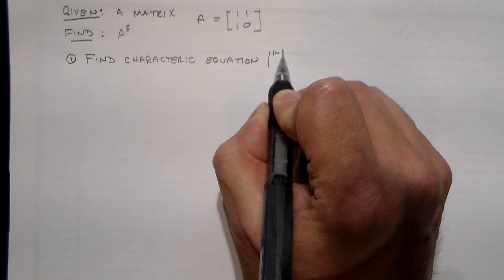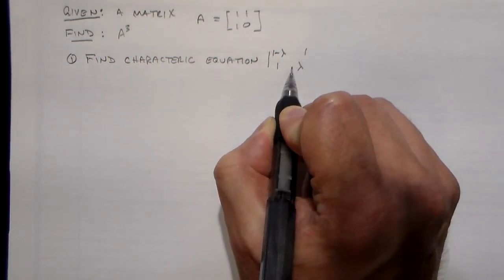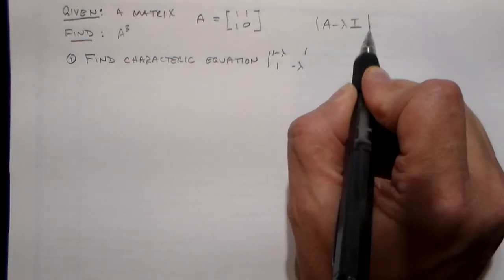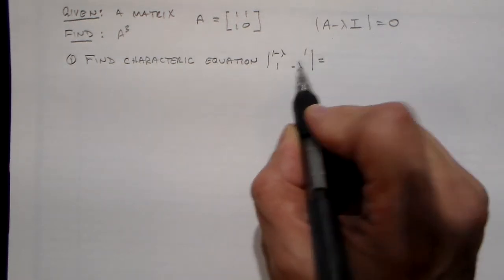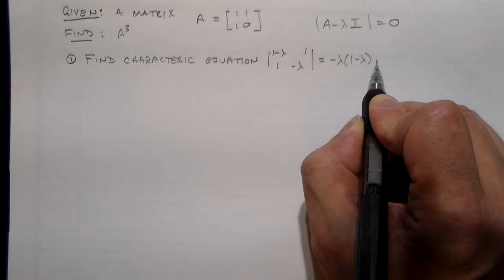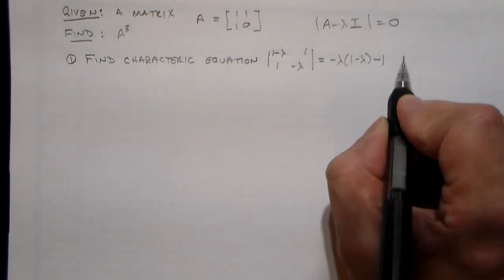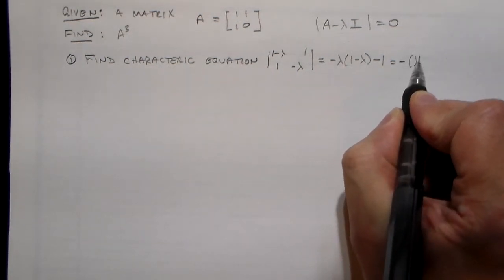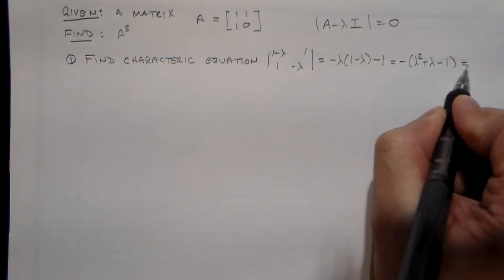The characteristic equation we all love is just taking A minus lambda I, finding its determinant, and setting it equal to zero. So we have minus lambda times (1 minus lambda), and we subtract one from that, which gives us minus lambda squared plus lambda minus one, all equal to zero.